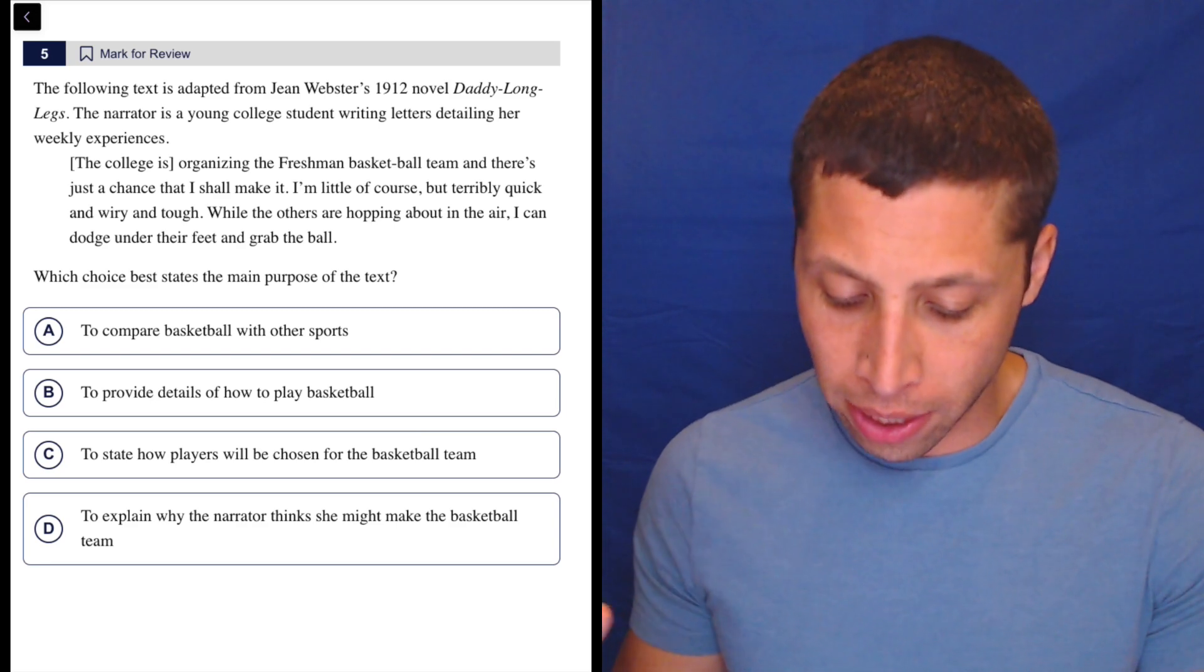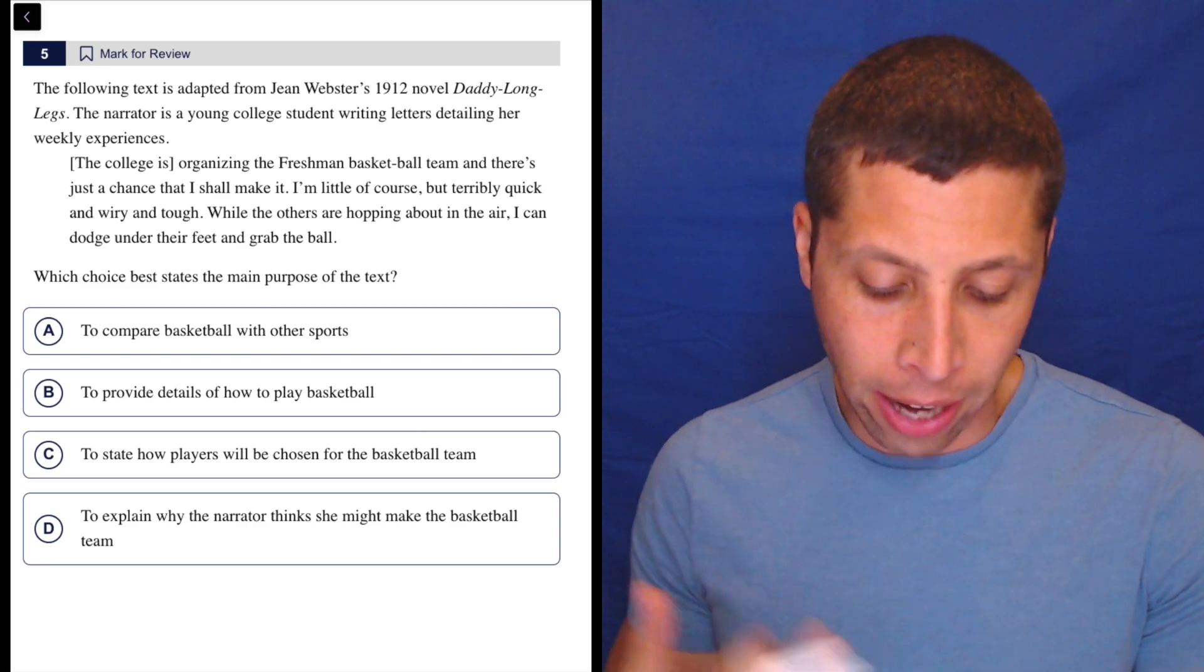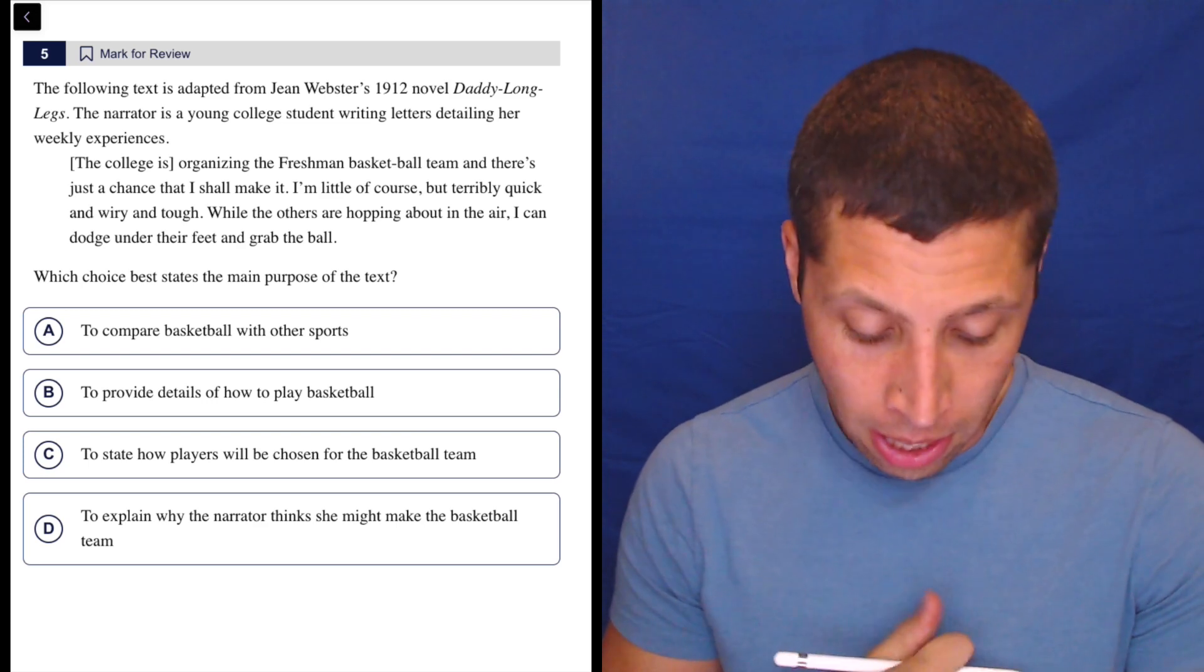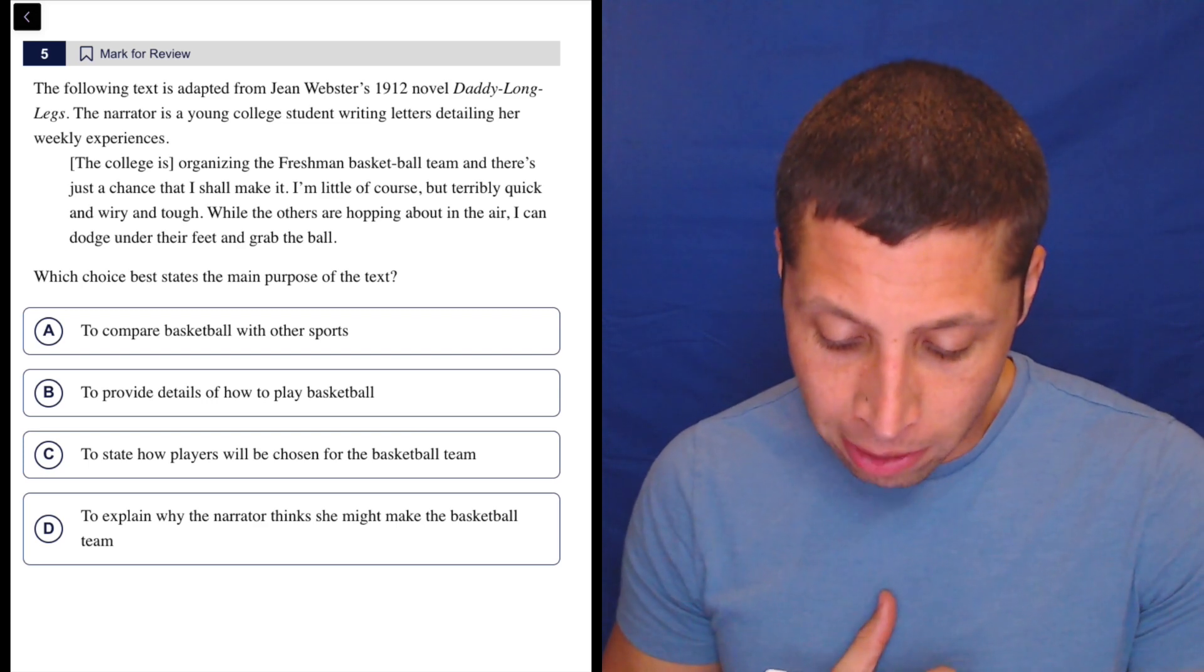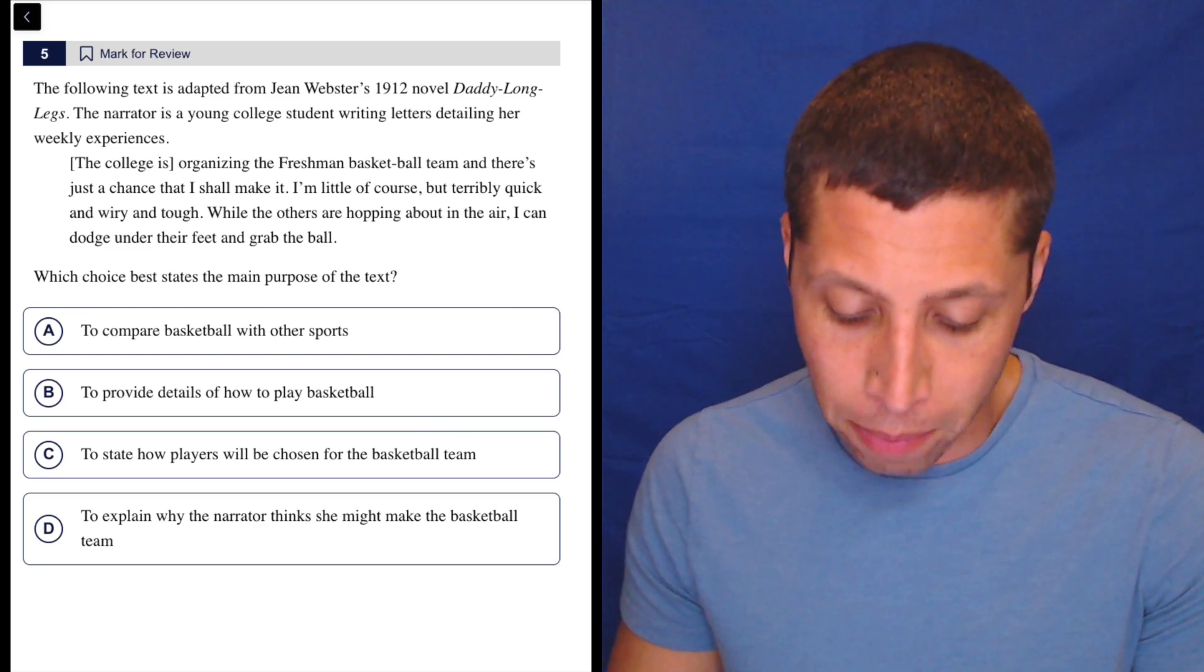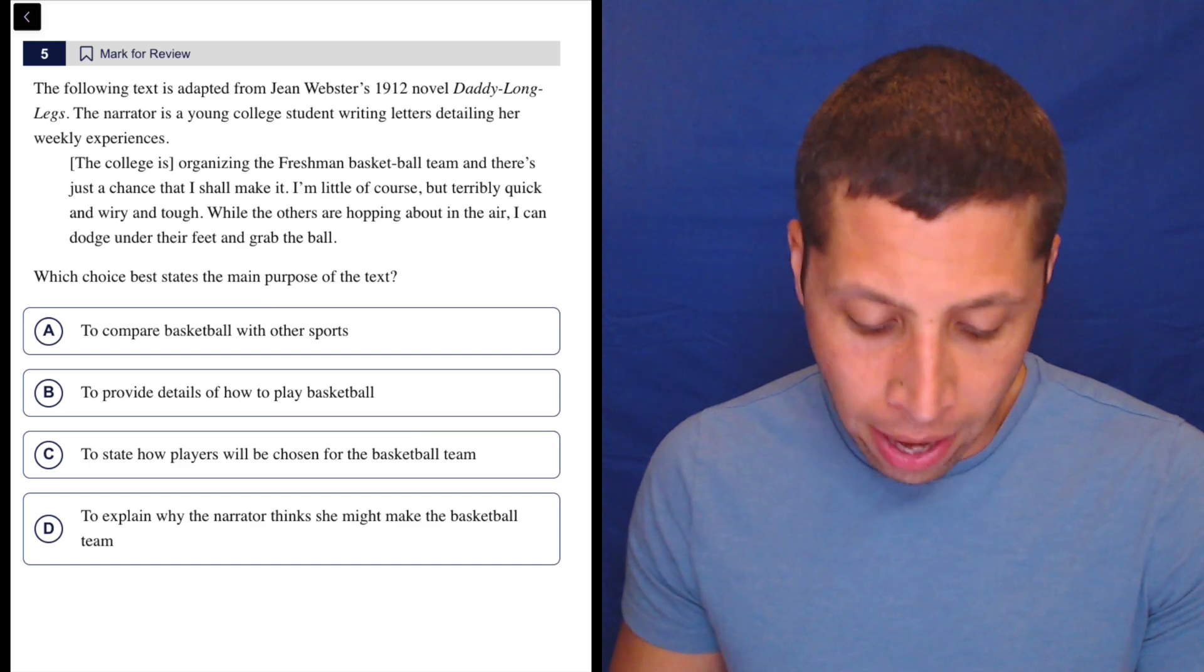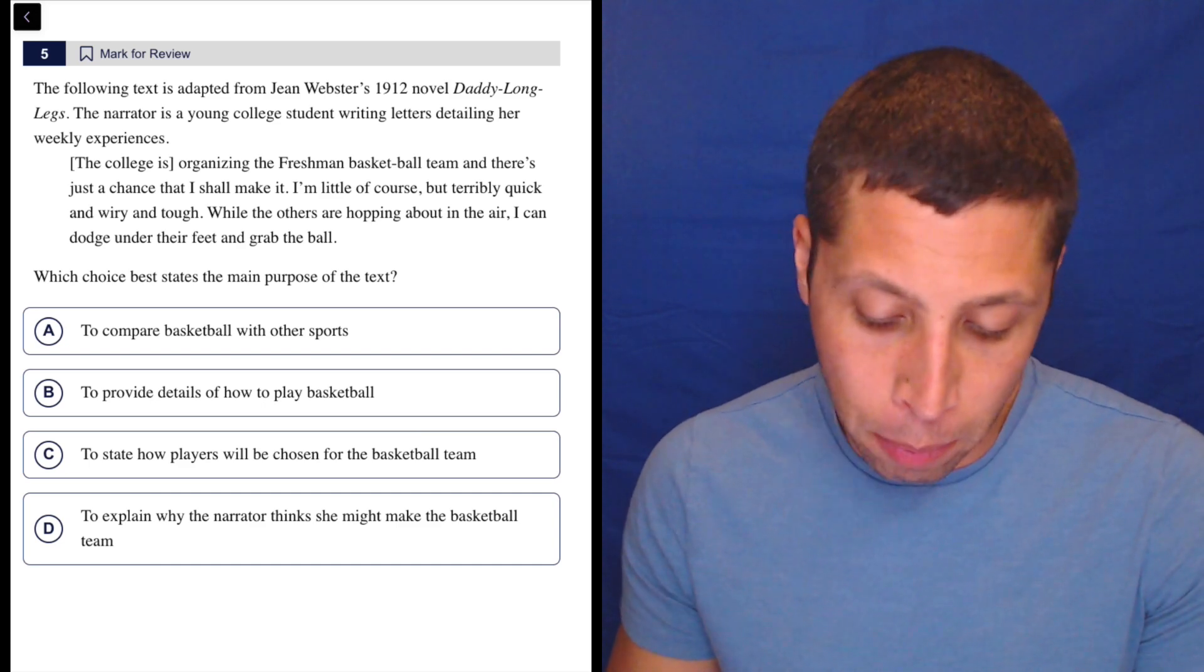The following text is adapted from Jean Webster's 1912 novel Daddy Longlegs. The narrator is a young college student writing letters detailing her weekly experiences. The college is organizing the freshman basketball team and there's just a chance that I shall make it. I'm little of course, but terribly quick and wiry and tough. While the others are hopping about in the air I can dodge under their feet and grab the ball.